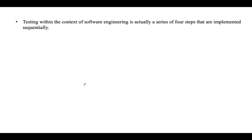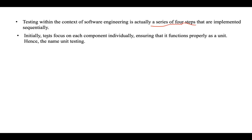Testing within the context of software engineering is actually a series of four steps implemented sequentially. Initially, tests focus on every component individually — performing testing on each component to check whether that component is working properly or not. That kind of testing is called unit testing: if a test is performed on a single component to check whether it is working properly, that is unit testing.